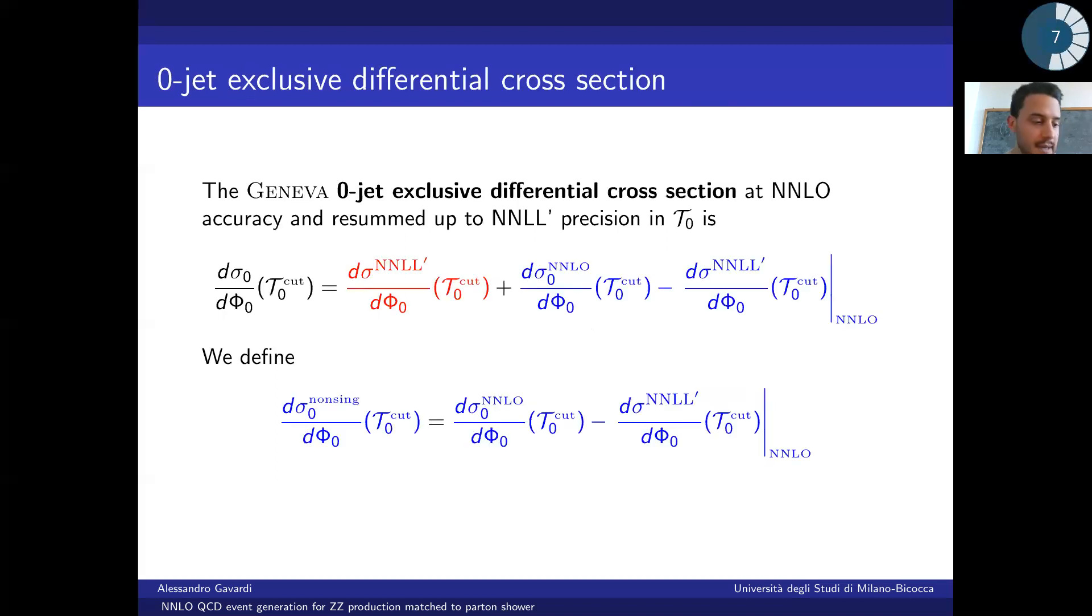This was about the division of the phase-space regions, but let's now see how the Geneva differential cross section is defined. In this slide we see the definition for the zero-jet exclusive differential cross section, which will take contributions from the phase-space points whose zero-jettiness is below tau0 cut. We want this cross section to be both NNLO accurate and resummed up to NNLL prime precision in tau0.